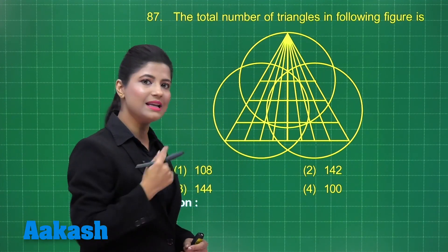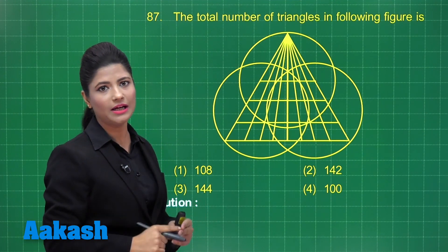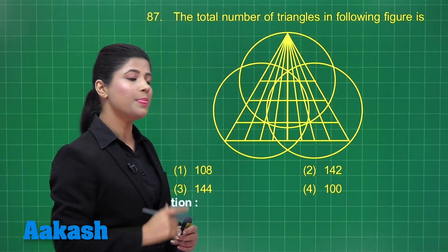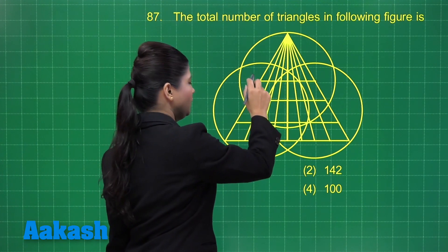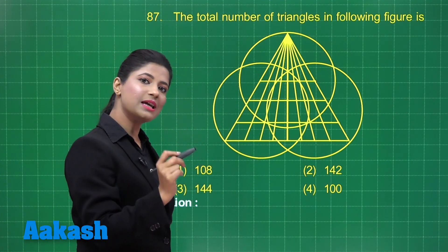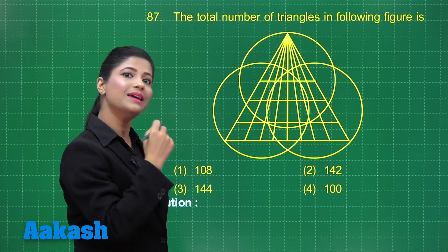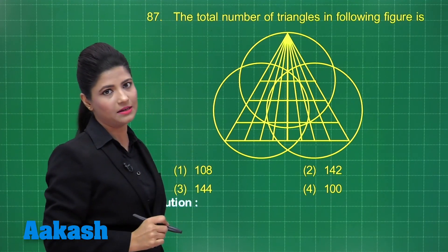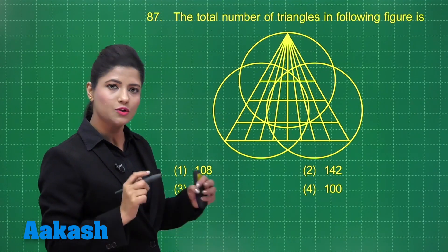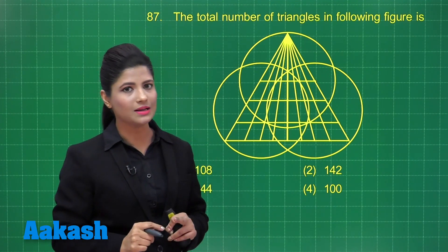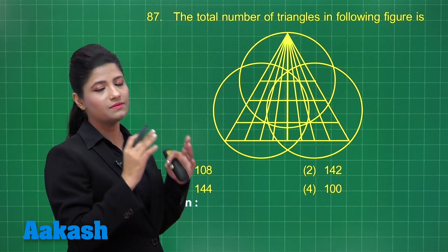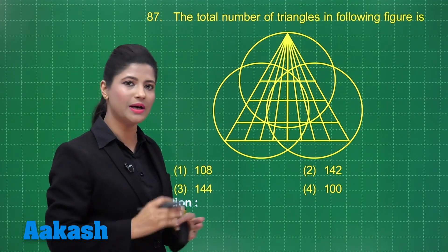For each of the 9 points, 8 line segments will be there. That means 9 times 8, total 72 line segments will be there. But when you consider the 1st point — from 1st to 2nd point, you count the line segment once. Then from the 2nd point to the 1st point, you again count the same line segment, meaning you are counting the same triangle twice. That needs to be counted only once, so we divide by 2 because we have counted each line segment twice.